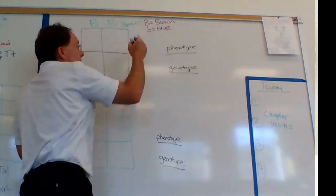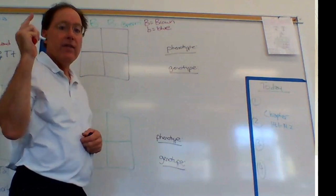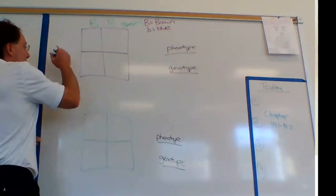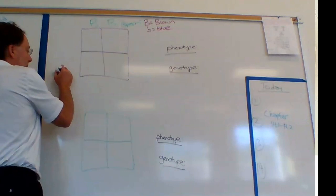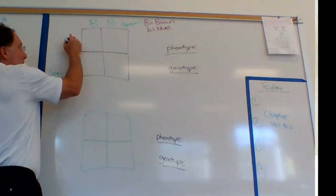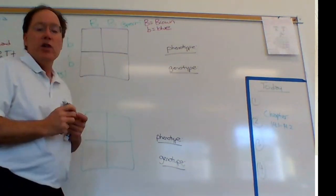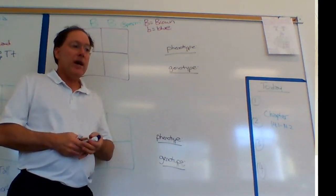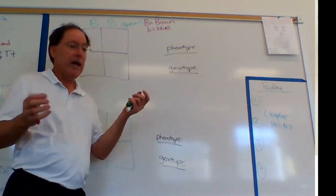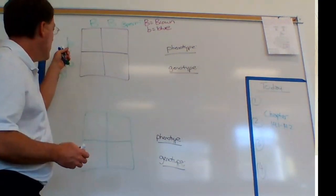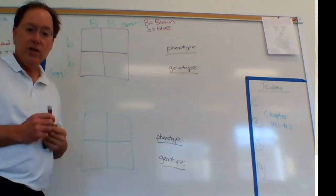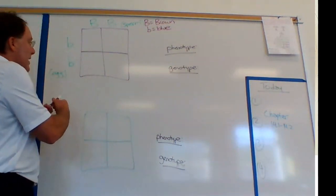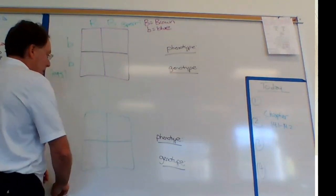Mom has blue eyes and has little b, little b — homozygous recessive — because blue eyes are recessive to brown. You must have homozygous recessive genes, little b little b, in order to have blue eyes.